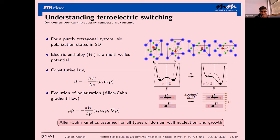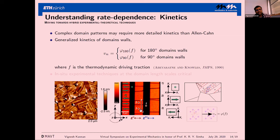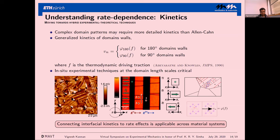The reality is more complex. The image on the left from a specific microscopy technique shows spatially variant polarization with intricate patterns. This means every type of domain wall inside the material has different kinetics — a different velocity as a function of the driving force. We are currently developing a model that requires in-situ experimental techniques, drawing ideas from physics and materials science. This is the direction we are going toward.